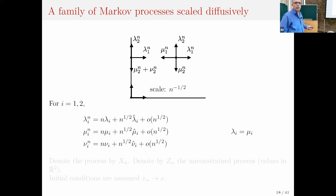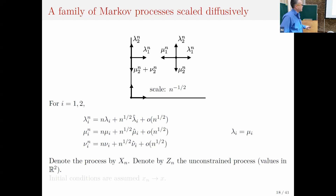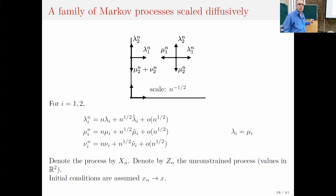This is what the generator or jump intensities look like in the interior. On the boundary, there are two differences: you cannot jump outside (so that arrow is cancelled), and the arrow going inward is strengthened — the intensity is larger by nu_{n,2}. The same thing happens on the other face. At the origin, you're left with just the lambdas. I'll call this process X_n. I also denote by Z_n the unconstrained process taking values in R^2. We assume initial conditions converge.